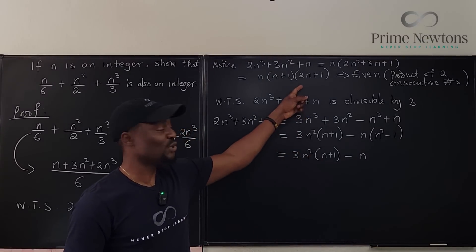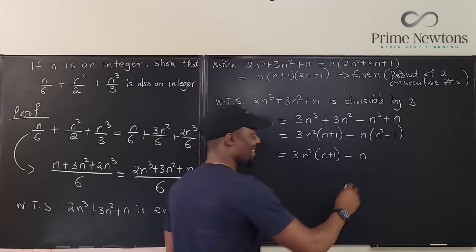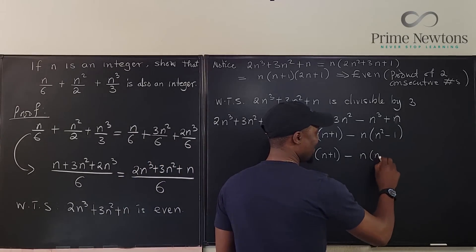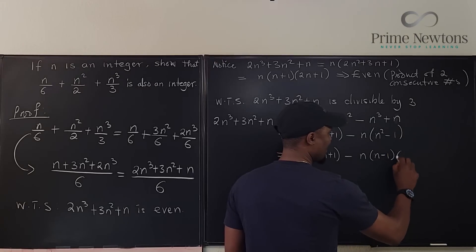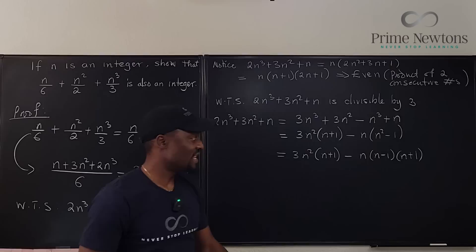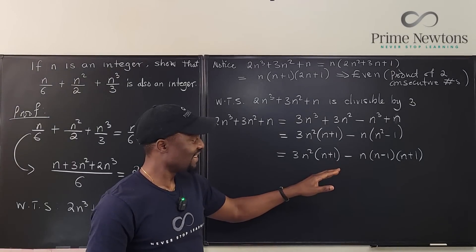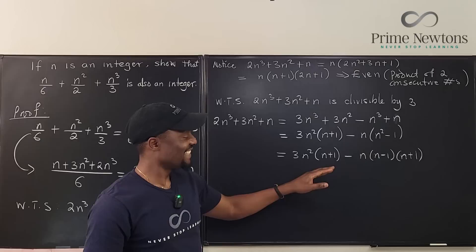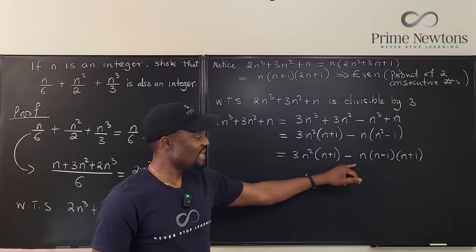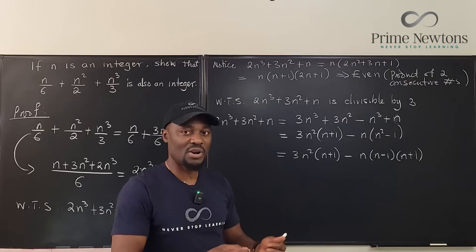This is n times n minus 1 and n plus 1, so it is n minus 1 times n times n plus 1. The product of three consecutive numbers is always divisible by 3.